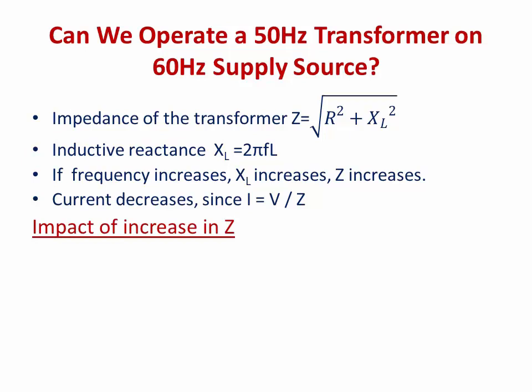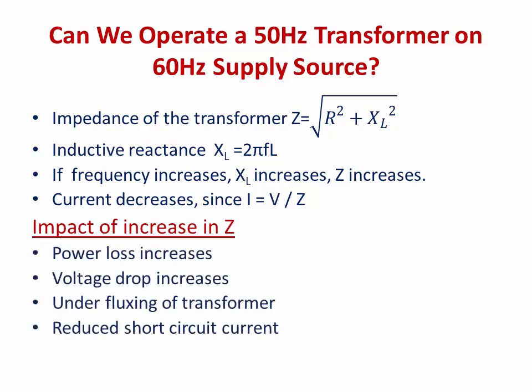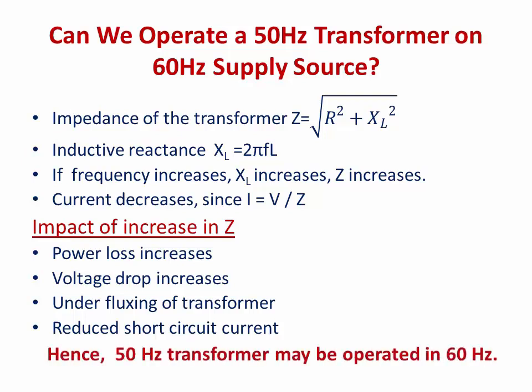Let us analyze the impact of increasing impedance. There will be power loss, voltage drop increases, under-fluxing in the transformer, and reduced short circuit current. Considering power loss and voltage drop, the increment is not going to have a great impact. Under-fluxing means we are operating the transformer in a normal operating region. Reducing short circuit current is a great advantage. Hence, a 50 Hz transformer may be operated on a 60 Hz supply without any difficulty.